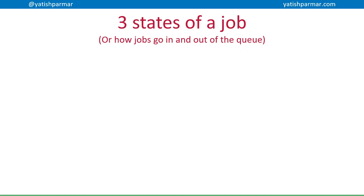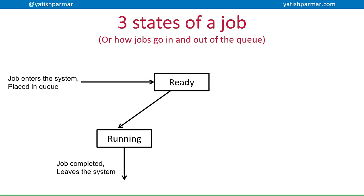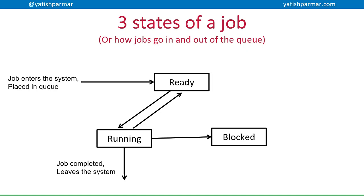A job enters the system and gets placed in the queue, ready to be processed — that's the high-level scheduler. It can then be moved into the CPU and executed. Once the job is completed, it leaves the system. At some point, particular jobs might be taken out of the running state and put back into a runnable state because something of higher priority has arrived. A job can also move into a blocked state because it's waiting for data; once that arrives, it goes back into the queue in a ready state.